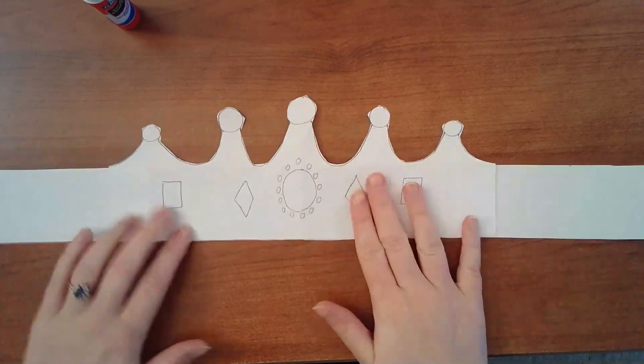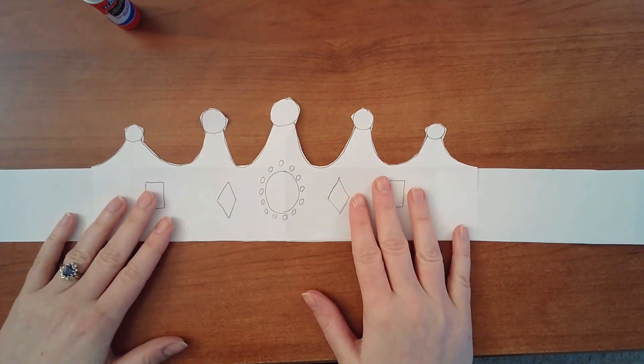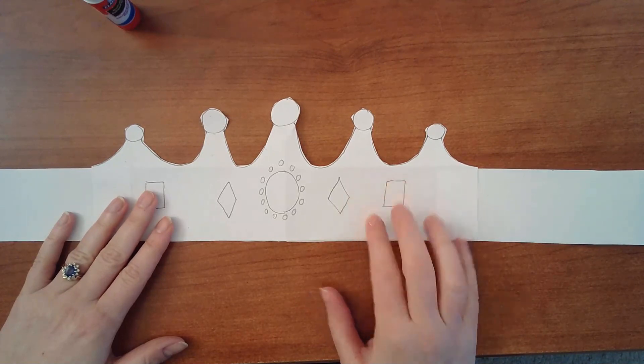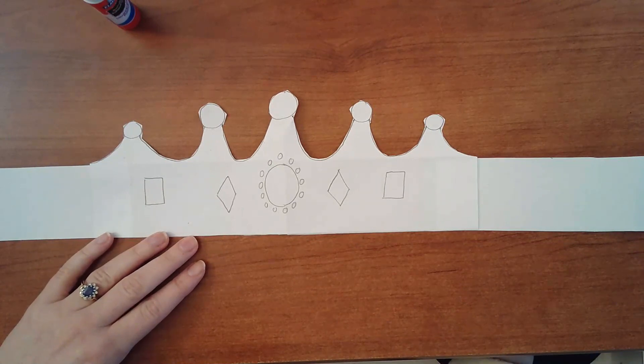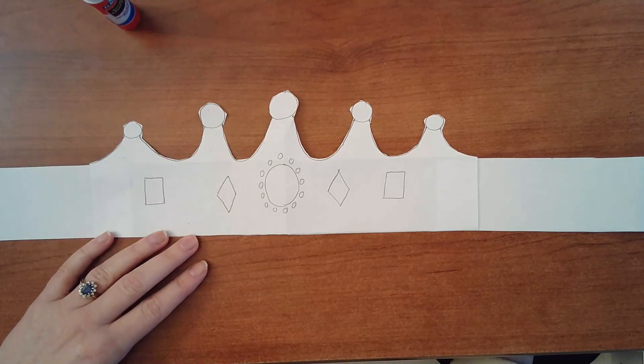There you go. That is a crown and you can color these parts if you want or you can leave them if you want. And then you're going to wrap it around your head and have somebody help you tape it together. Okay princes and princesses I hope it worked out great and remember you can always do another one or change things because we keep on working and things don't have to be perfect. See you later.